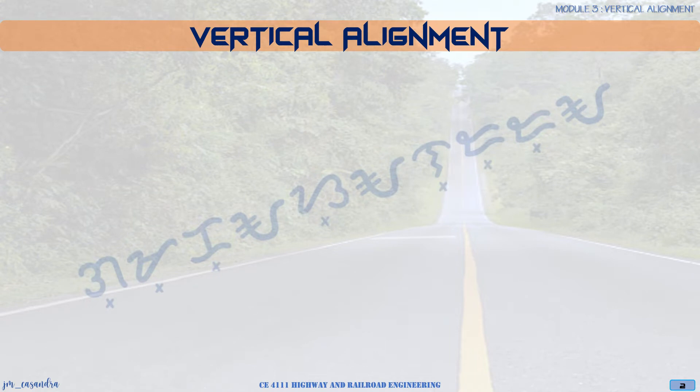In horizontal alignment, we use horizontal curves or circular horizontal curves in designing or correcting the alignment of the roadway along its plan. In vertical alignment, we now use parabolic vertical curves. These curves are used mostly to design the profile of highways, and their properties make it easier to lay out the alignment of the roadway in the field.